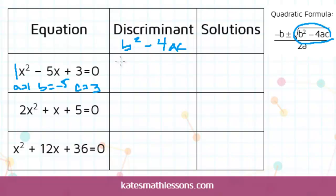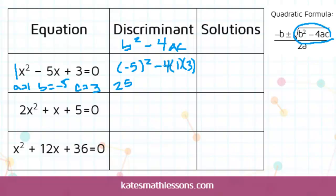So you do b squared — be careful with your signs. b is negative 5, and then minus 4ac. Negative 5 squared is positive 25; remember a negative times a negative is always a positive. And you can treat this as negative 4 times 1 times 3, which is negative 12. So you have 25 minus 12.